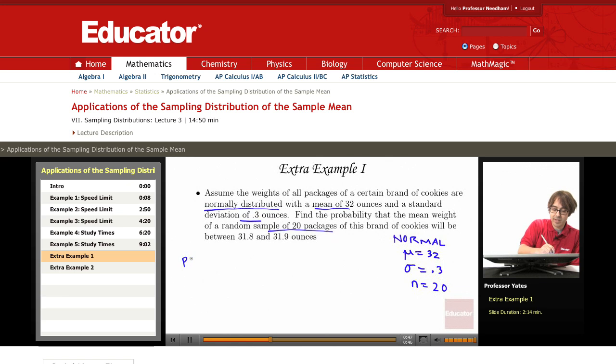So we're trying to find the probability that the sample mean is going to be between 31.8 and 31.9. Because it's a normal distribution, I could standardize these and use z-scores to find the probabilities.